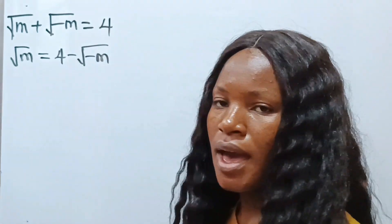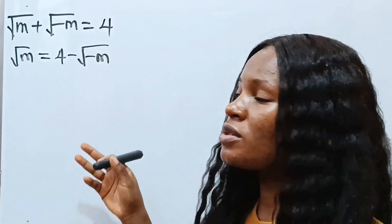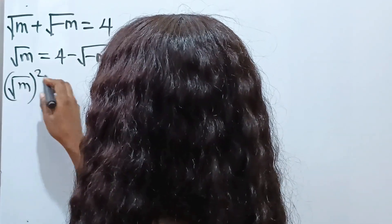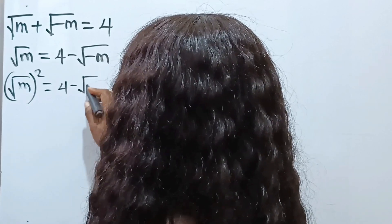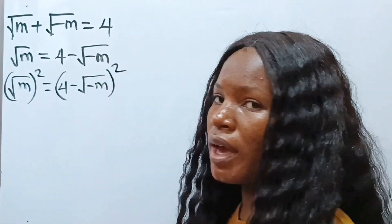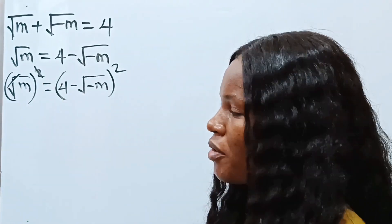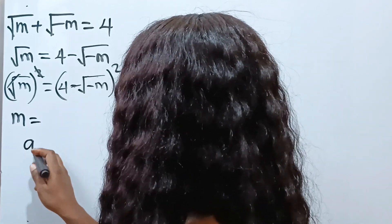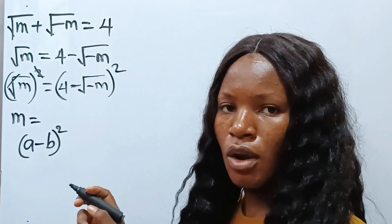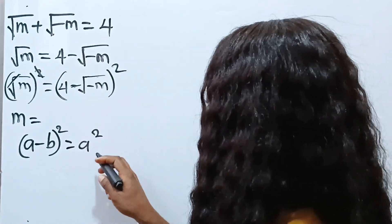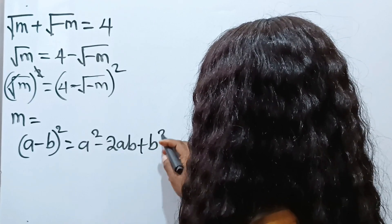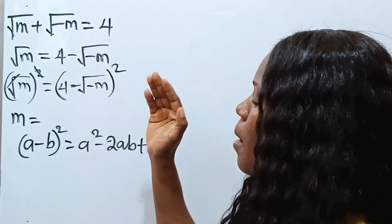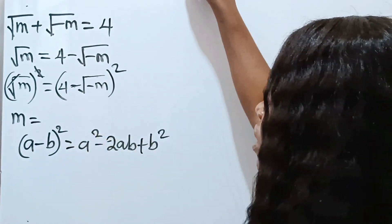Now let's square both sides of the equation so that I can get the value of m. So square root of m, squared, is equal to four minus square root of negative m, squared. The square cancels the square root, giving us m on the left. Now for the right side, using the algebra identity: a minus b, all squared, is equal to a squared minus two ab plus b squared. In this case, a is four and b is square root of negative m.